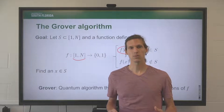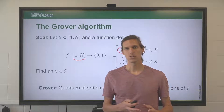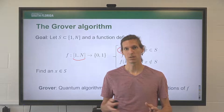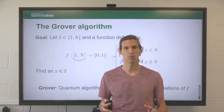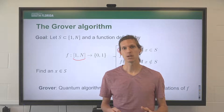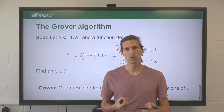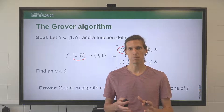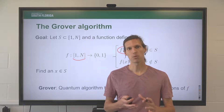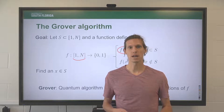With classical computers, assuming we have only one marked element, you would have to go through at least half of the list of all possible elements in order to find the marked element with probability 50%. So Grover's algorithm represents a very strong improvement over classical computers, and that's why it's a really important milestone showing improvements that are completely impossible to do classically.